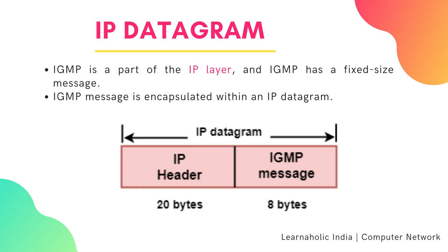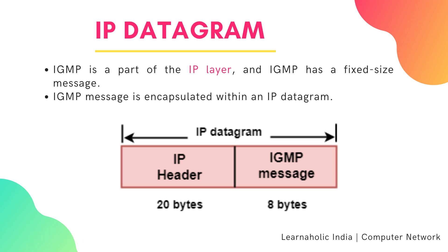The following figure shows an IP Datagram Packet which is of 28 bytes. 20 bytes are allocated for the IP Header and 8 bytes are for the IGMP Message. IGMP is a part of the IP layer and has a fixed size message. The IGMP Message is encapsulated within an IP Datagram.